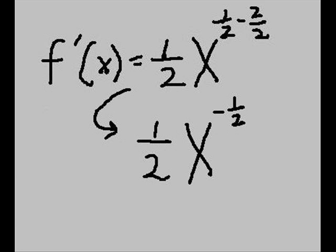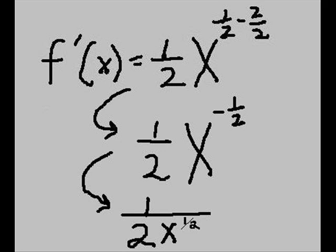Now I'm going to reformat it. 1 over 2 is in the denominator. x to the negative one-half power goes right into the denominator, but it goes in as a positive, as x to the positive one-half power.